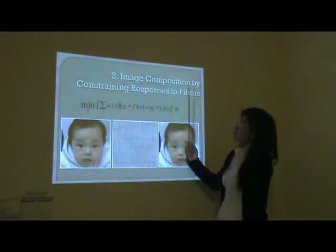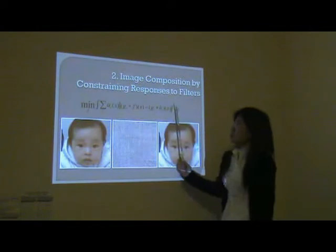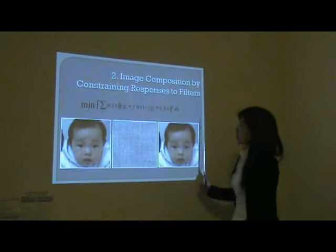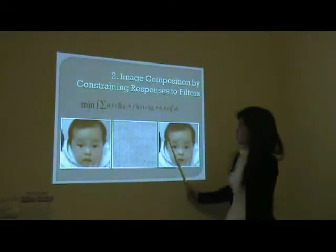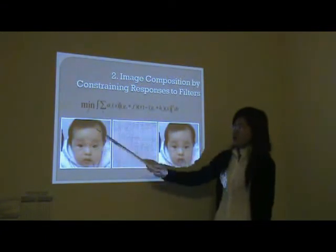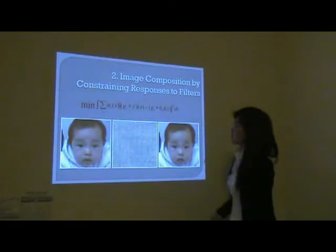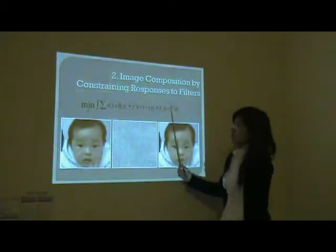Second, image composition by constraining responses to filters. It provides a uniform framework for a variety of image composition types. For example, we want to achieve an objective image with the same object in the first picture and similar texture in the second image. Then, how to get it? We can constrain it through a minimization equation.